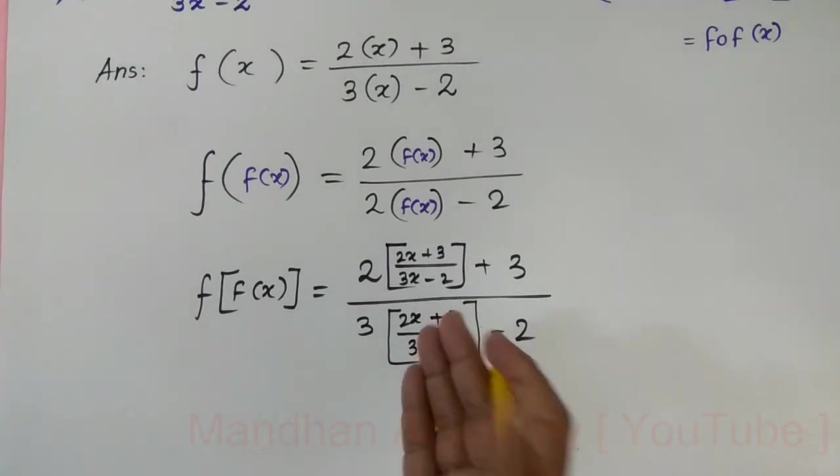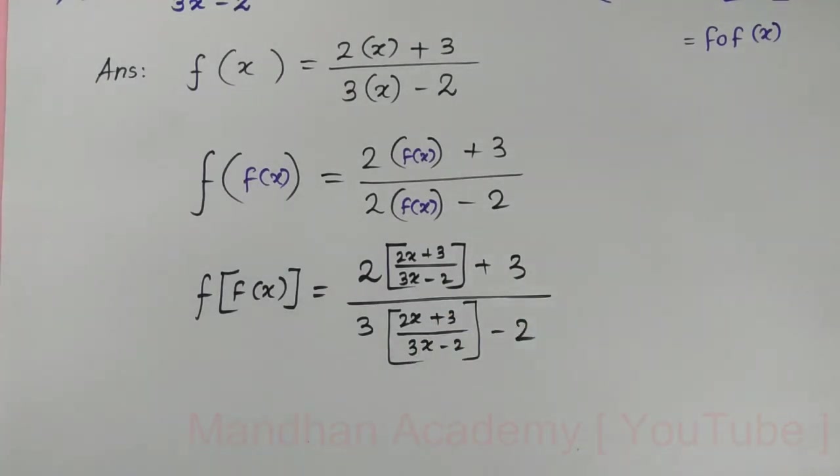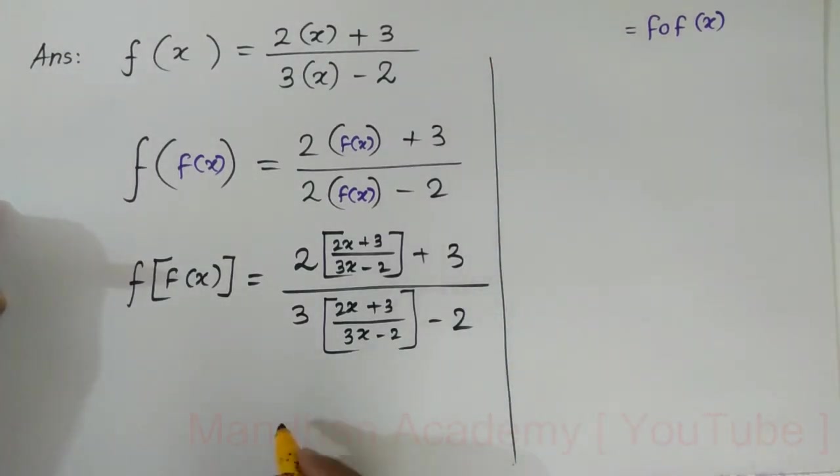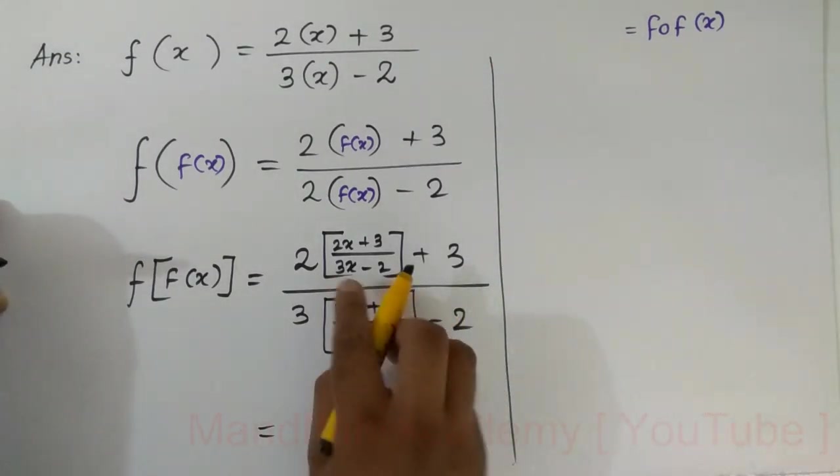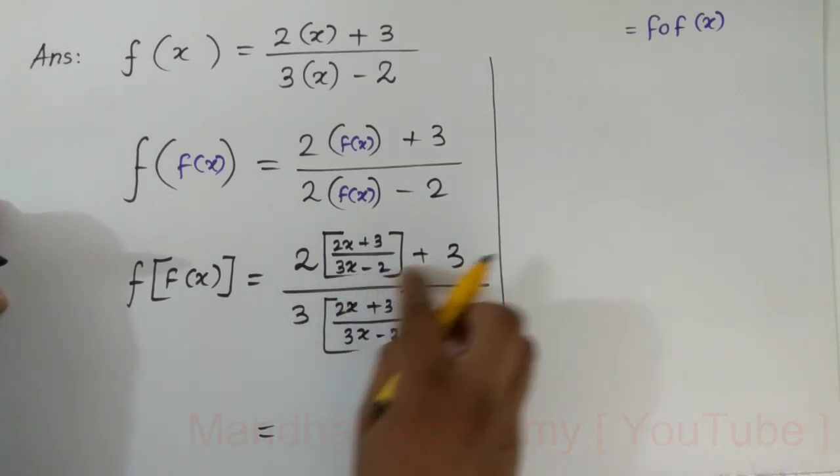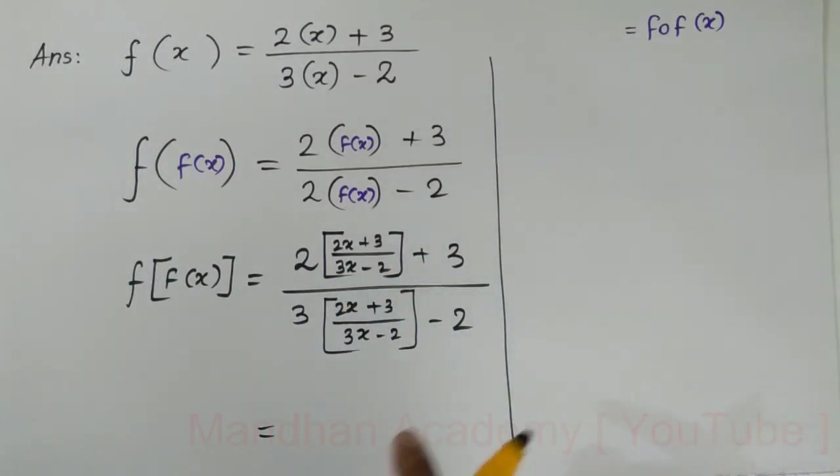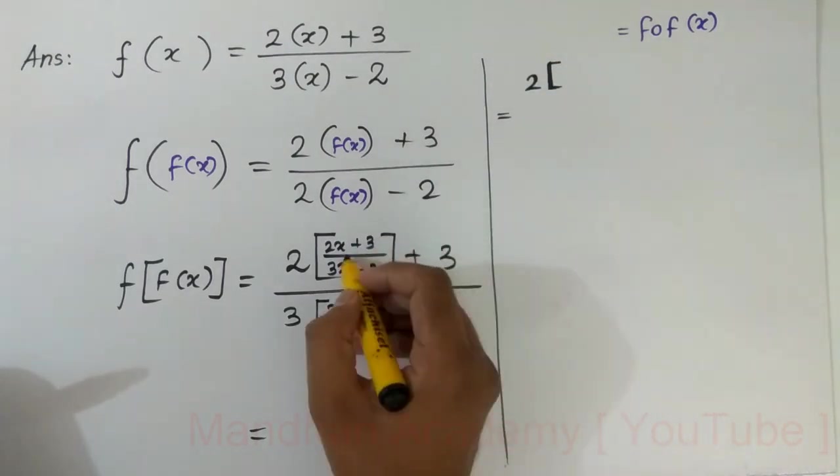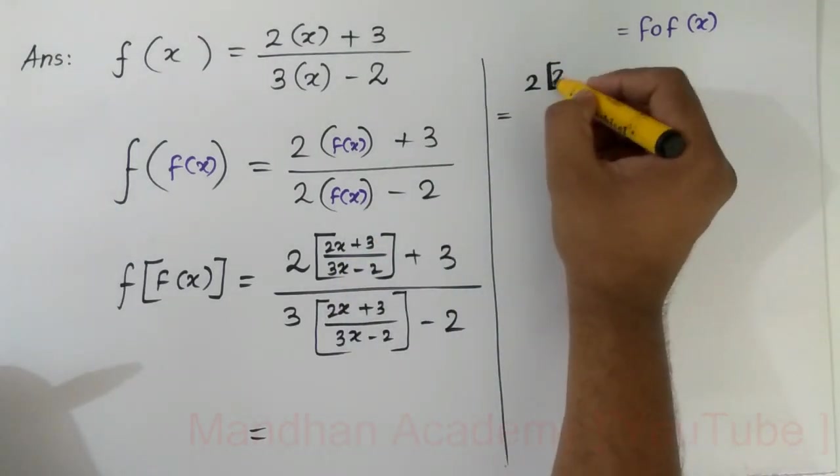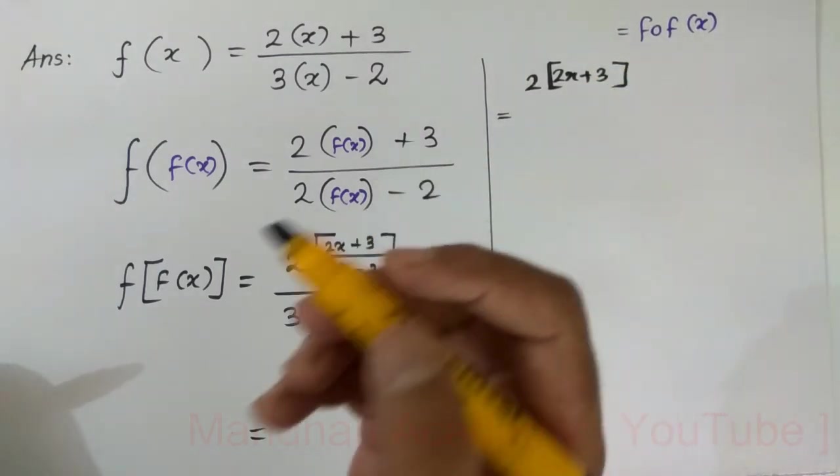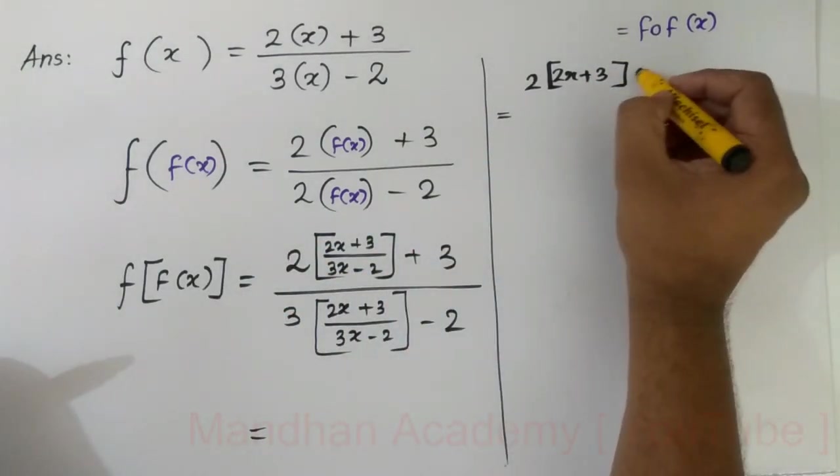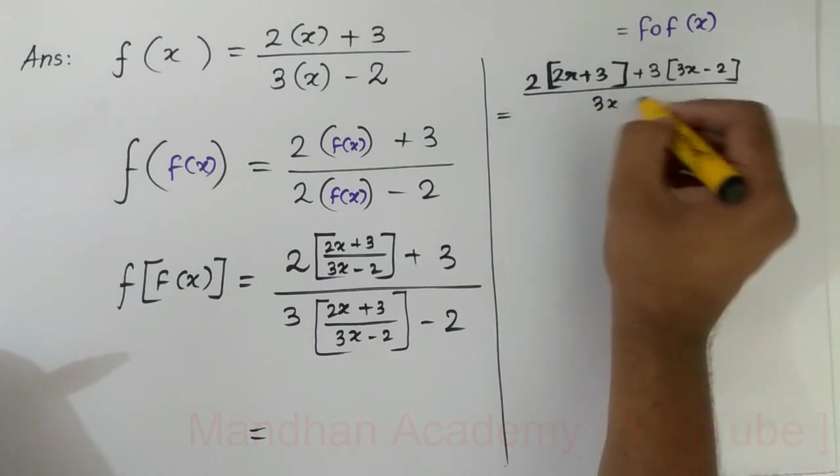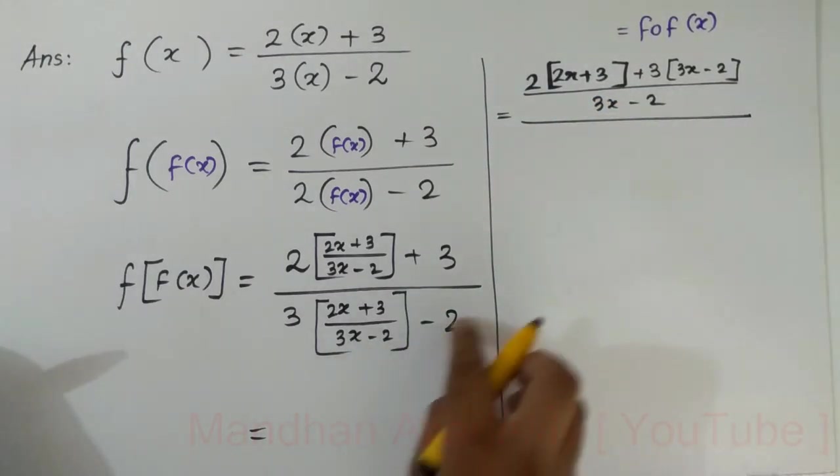Now just simplify the equation and you will get the final answer. In simplification we have to take the LCM. What is the LCM? 3x minus 2 should be multiplied with 3 in order to get the LCM. So my answer is 2 times 2x plus 3, then 3 times 3 which is 9, times 3x minus 2.